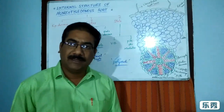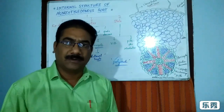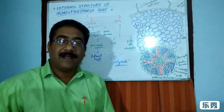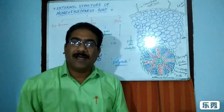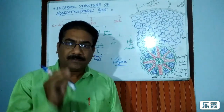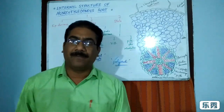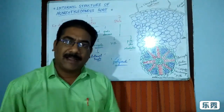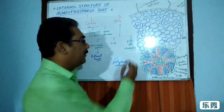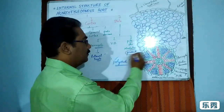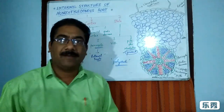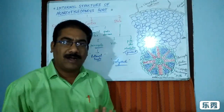Secondary growth is absent in the monocot root — another important character. Regarding pith or medulla: in the dicot root, the pith is completely absent or very poorly developed. But in the monocot root, a well-developed pith is present with parenchyma cells. This is an important character for the monocot root.